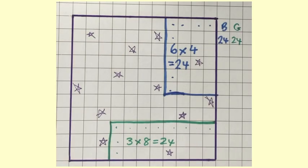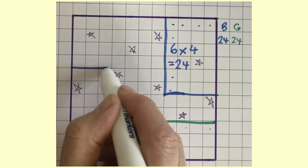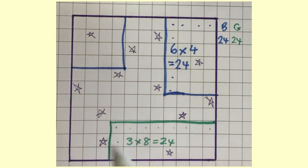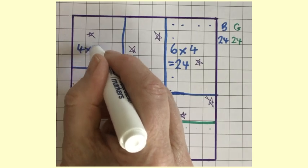So it's blue's turn now, trying to work out what to do next, decides to go across the top left hand corner. And this is a four by four square, which gives 16, adds that on to their total.